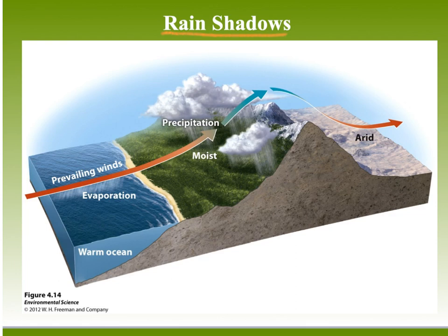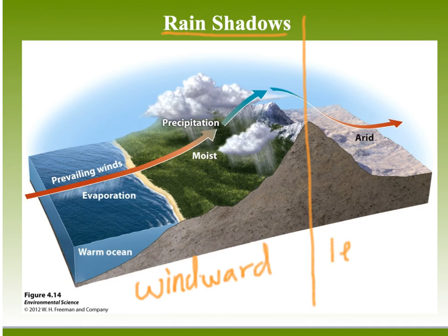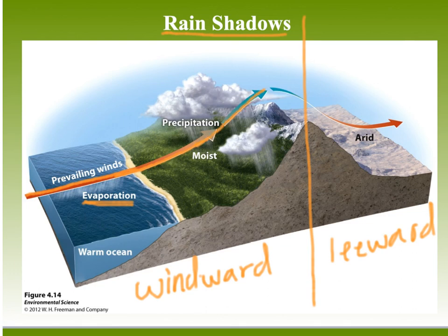First thing we need to talk about is rain shadows. In a rain shadow you have two different sides: the windward side and the leeward side. Evaporation occurs over the ocean, and prevailing winds towards the landmass pick up that water vapor and take it towards the landmass. As it reaches the mountain range it increases in altitude, and when it increases in altitude it experiences adiabatic cooling.